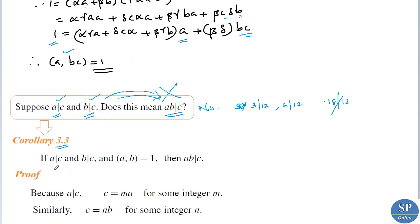Corollary 3.3: if a divides c and b divides c, along with GCD(a, b) equals 1 — that is, a and b are relatively prime — then we can say that ab divides c. Without the relative primality condition, ab dividing c does not follow. For example, 3 divides 12 and 4 divides 12 with GCD(3,4) equals 1, so 3 times 4 equals 12 divides 12.